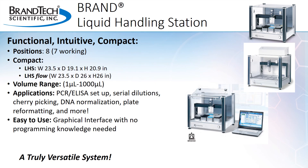Brand offers two benchtop automated liquid handling systems: the LHS and the LHS Flow with integrated HEPA filtration. Both have eight positions with seven working positions and are compact, being about a two foot by two foot box. These systems can work with a variety of consumables such as PCR tubes or plates, 96 and 384 well microplates, and reagent reservoirs, just to name a few. The volume range is one microliter up to 1,000 microliters, with three single channel liquid ends and two multi-channel liquid ends. These systems are great for PCR setup, serial dilutions, and more, and are super easy to use.